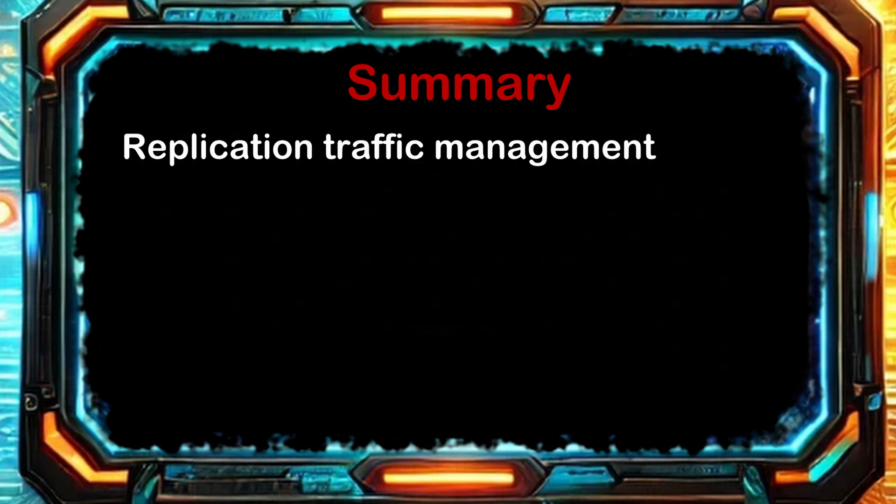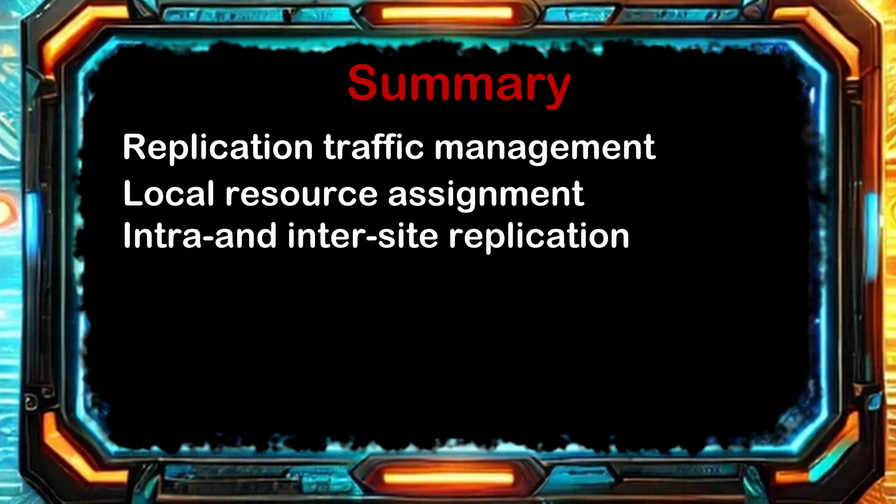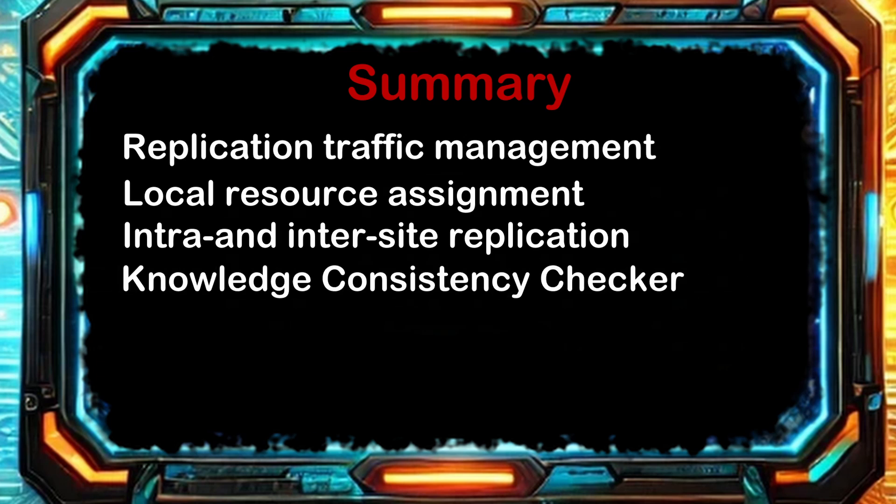In this lesson, we looked at how you can use Active Directory sites to manage replication traffic and to make sure client computers are referred to local resources. We talked about how intrasite and intersite replication work and the part that the Knowledge Consistency Checker plays in that process. We discussed the configuration of sites, subnets, and site links and how you can control traffic flow by assigning certain costs to the site link objects. We finished by talking about the Try Next Closest Site Group Policy and how enabling it can help a network run more smoothly.